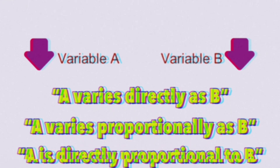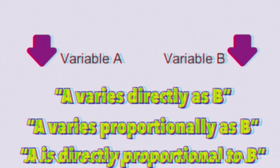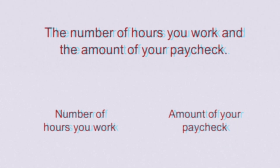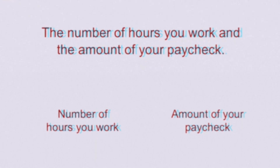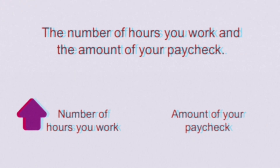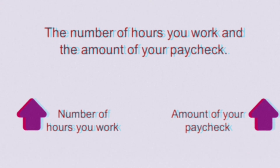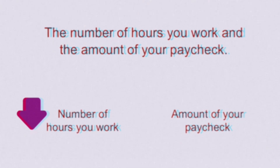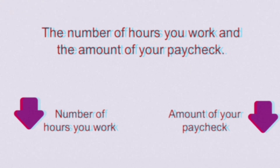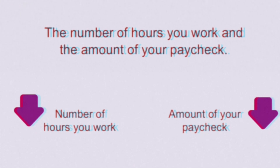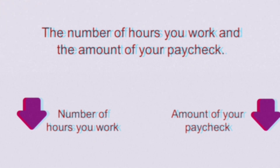Now let's take a look at some real-life examples of direct variation. The number of hours you work and the amount on your paycheck are directly proportional to each other, which means that if you work more hours, then you get more money. On the other hand, if you work fewer hours, then you get less on your paycheck. So the number of hours you work is directly proportional to the amount of your paycheck.